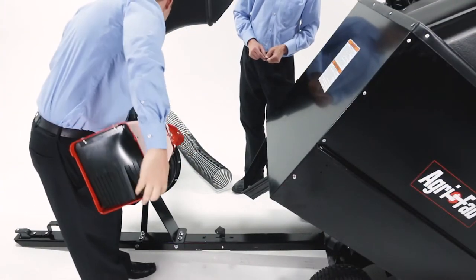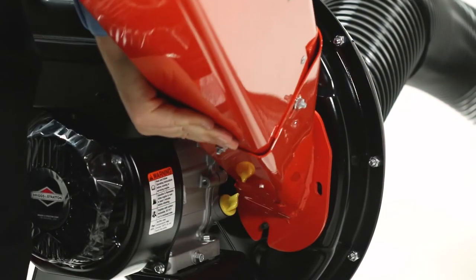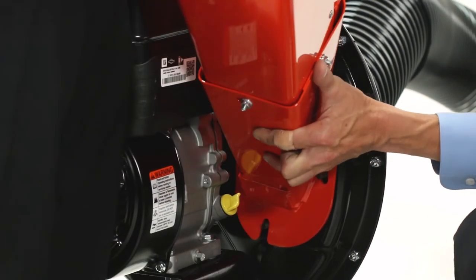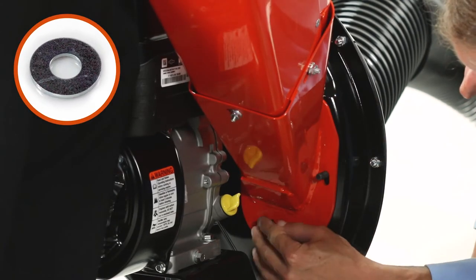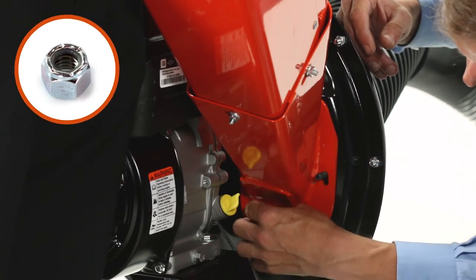Then, align the chip or chute assembly. Next, secure it using three 5⁄16-inch flat washers and 5⁄16-inch nylock nuts.